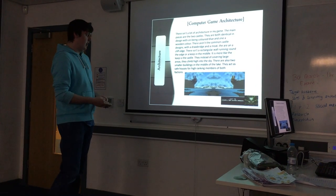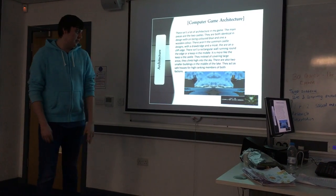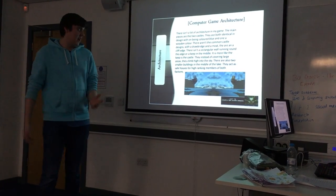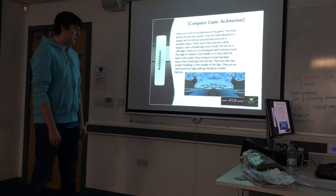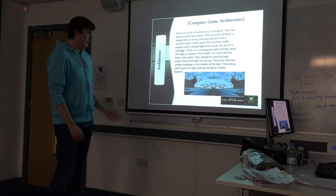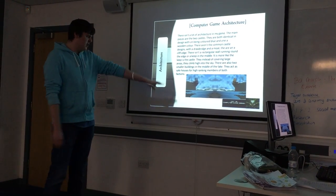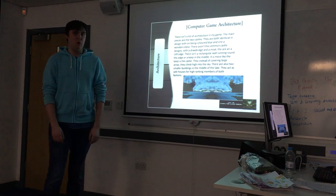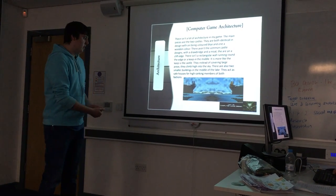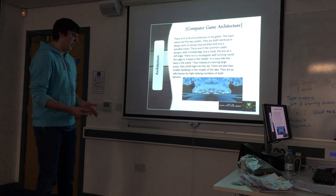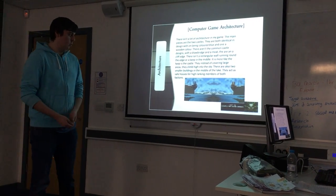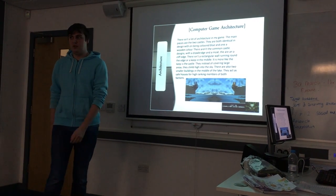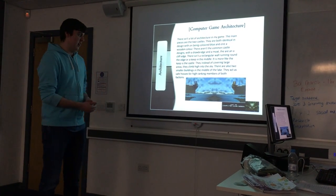Architecture. As I said, there's two factions. So there will be two castles which are fully furnished with everything in. And there are two smaller buildings which are like outposts where the king or whoever can go in there and do their own private stuff, things like that.